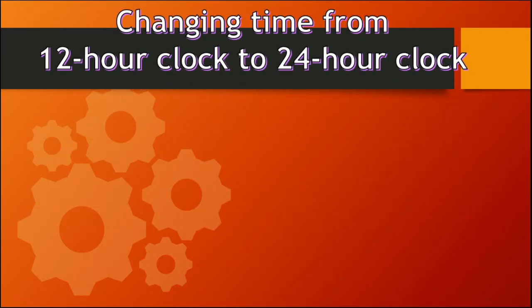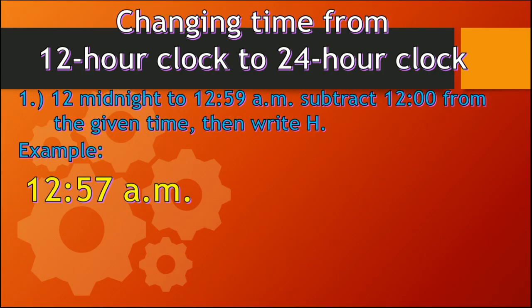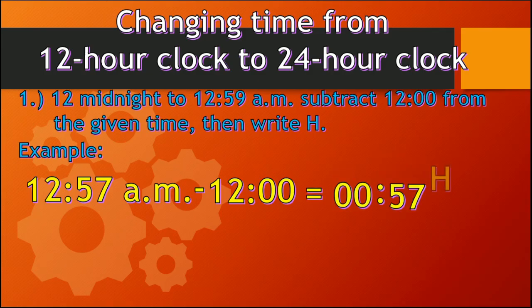When changing time from 12-hour to 24-hour clock: for times from 12 midnight to 12:59 AM, subtract 12:00 from the given time, then write H. Example: 12:57 AM — subtract 12:00, so you get 0057 hours.